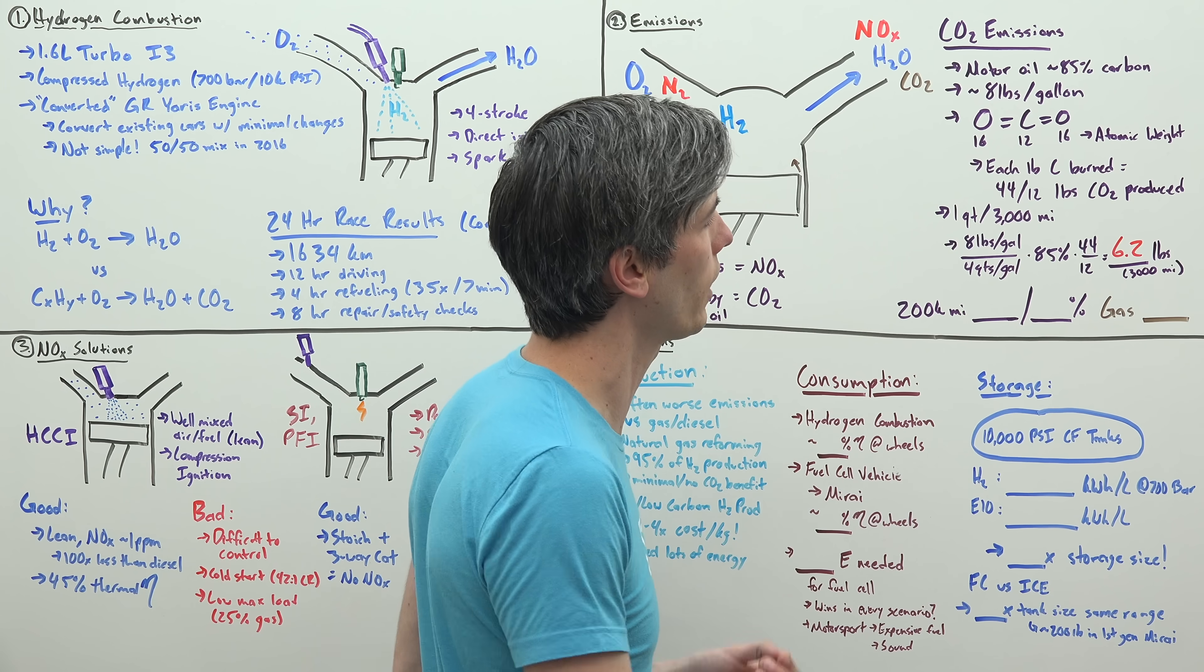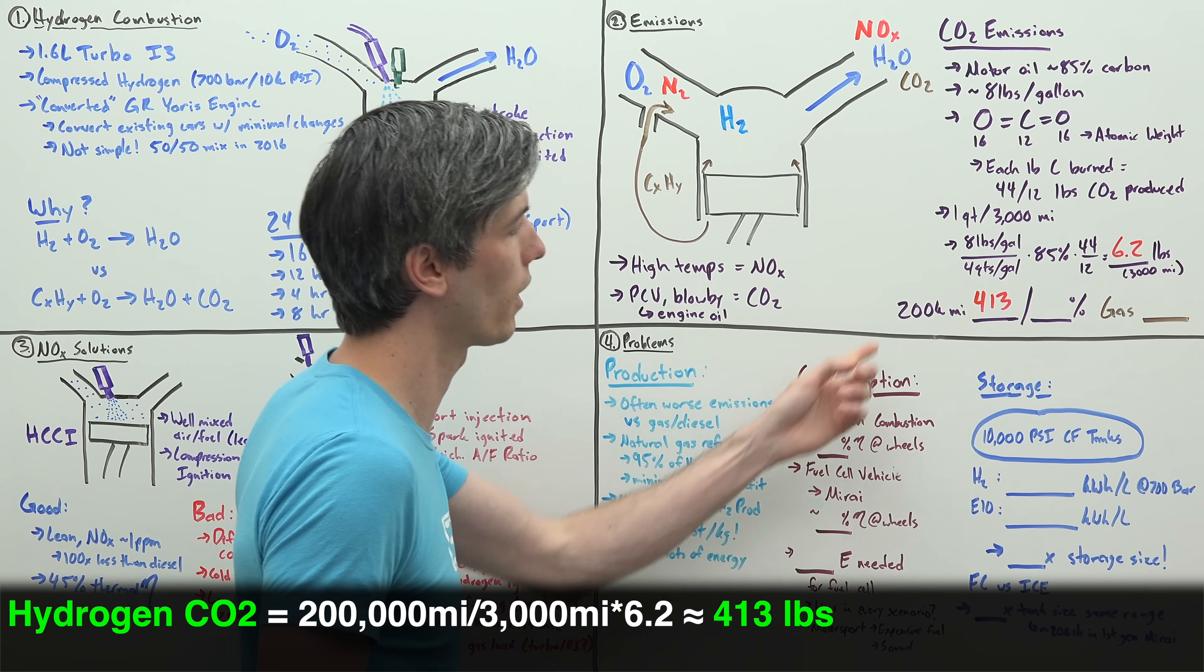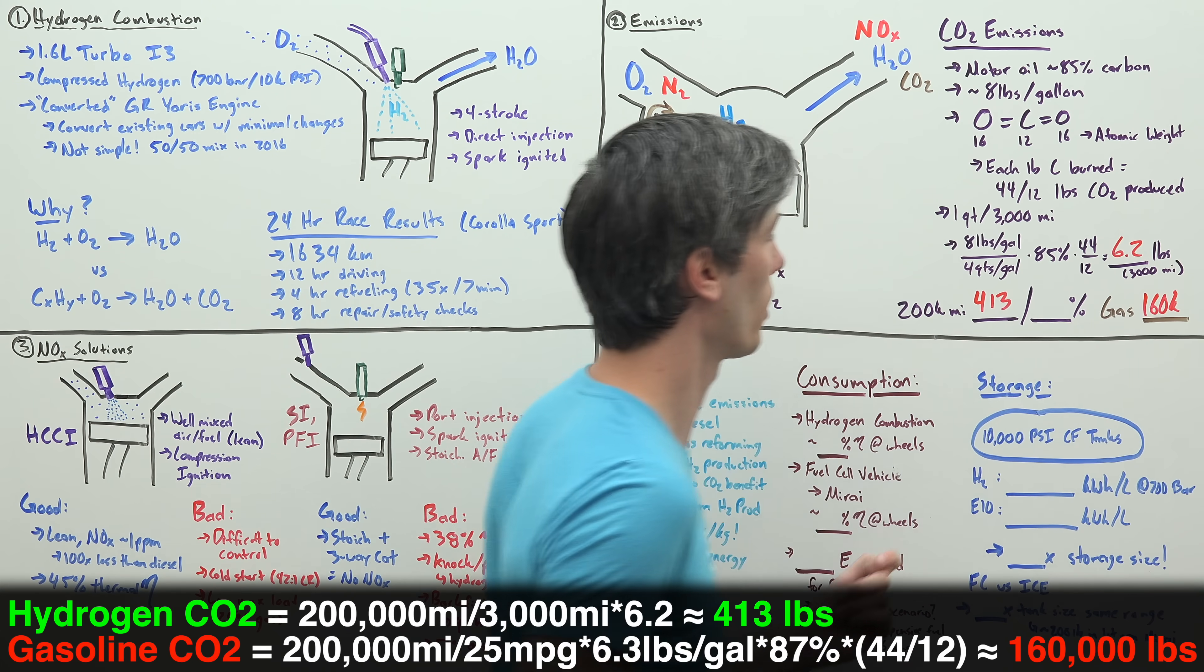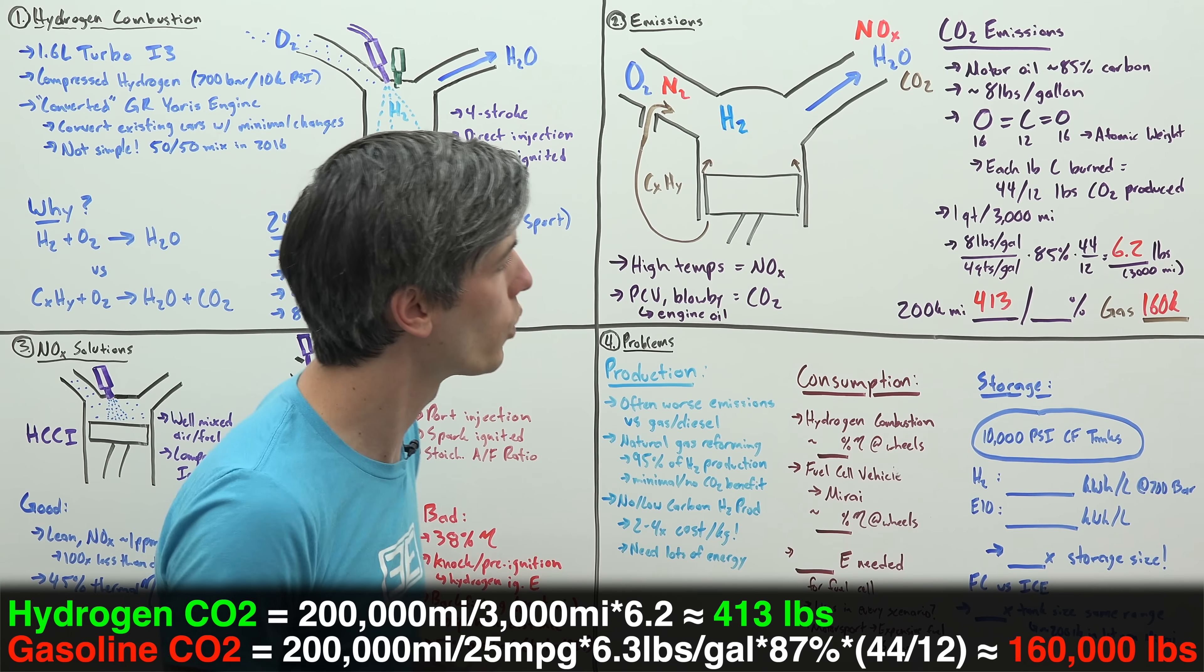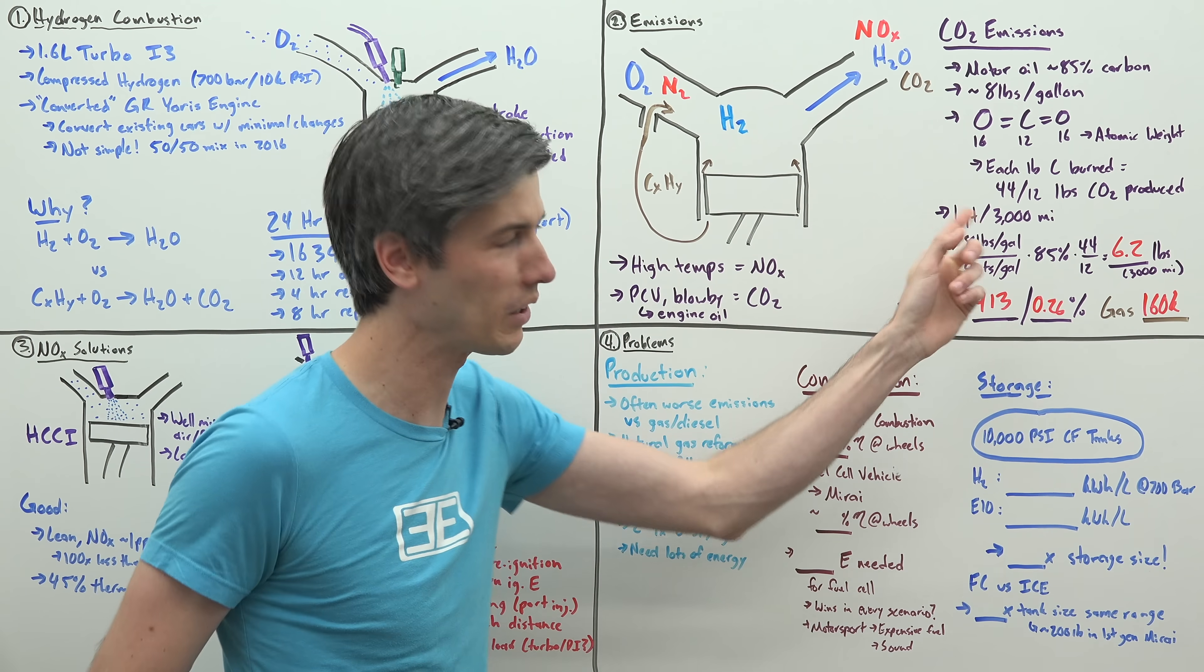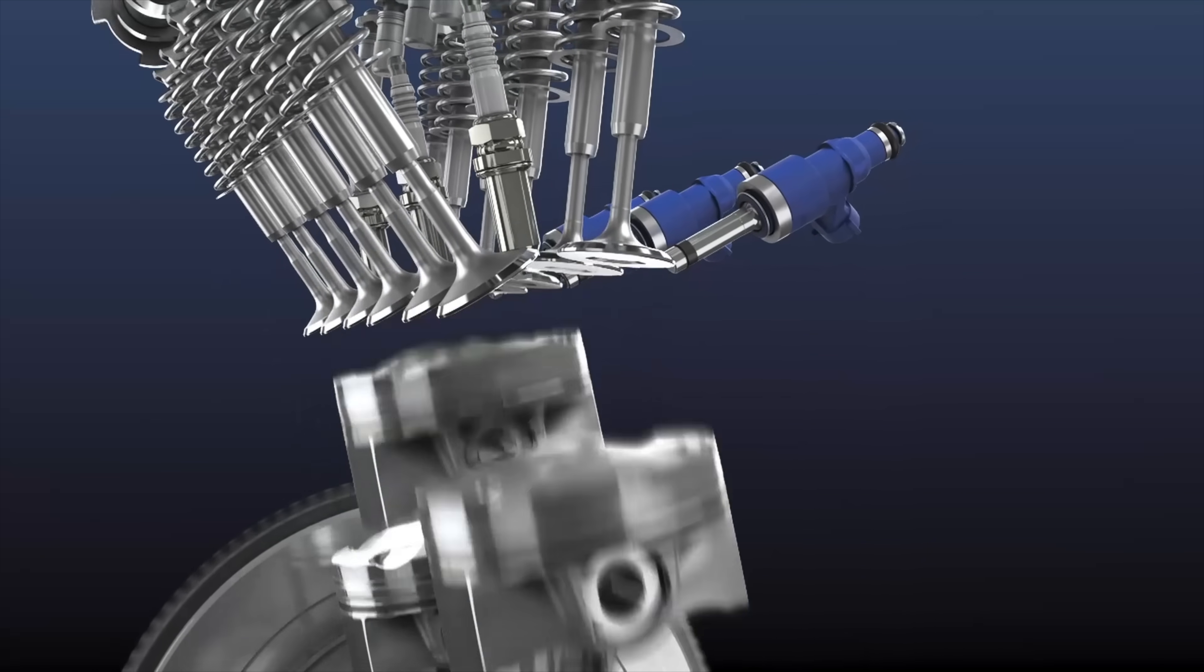Let's say we drive 200,000 miles with this vehicle burning oil at that rate. That gives us a total amount of CO2 emitted, 413 pounds over 200,000 miles. Compare that to the typical gasoline engine, that's about 160,000 pounds of carbon emissions using an average of 25 MPG. In comparison, we're at just 0.26%. Even if you were burning a lot of oil, the amount of carbon emissions is almost negligible.